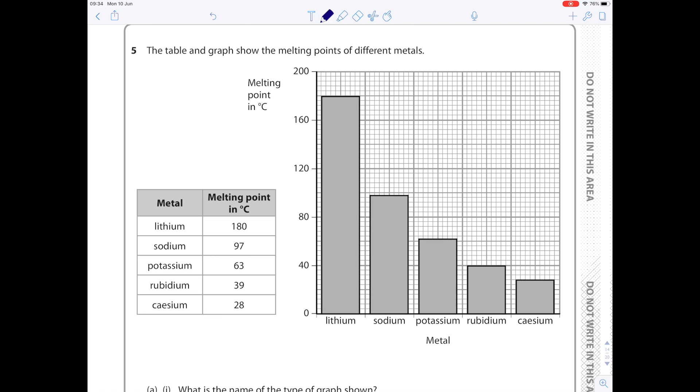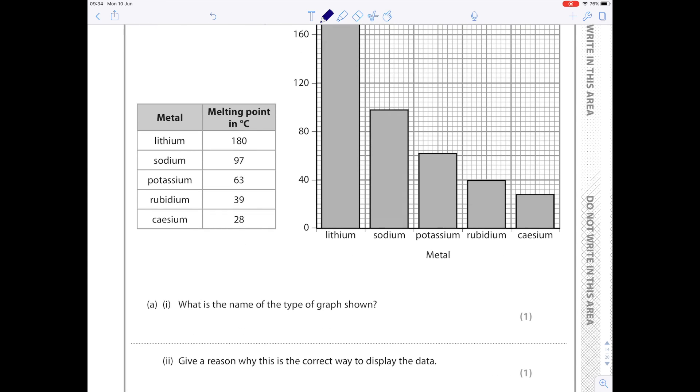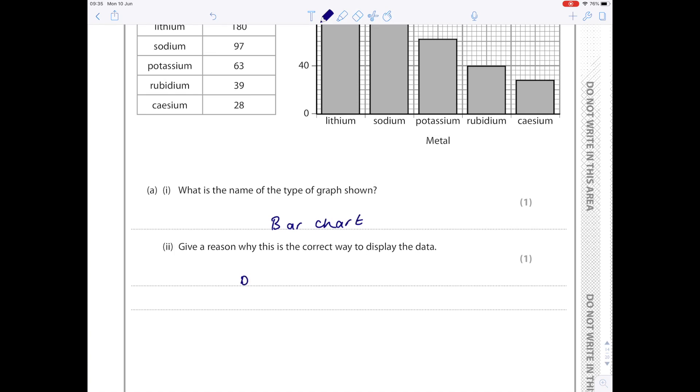The table and graphs show the melting points of different metals. Lithium has the highest melting point here. Cesium has the lowest. What is the name of the type of graph shown? This is a bar chart. Give a reason why this is the correct way to display the data. The easiest thing to say here is because the data is discontinuous, which means it fits into particular categories.